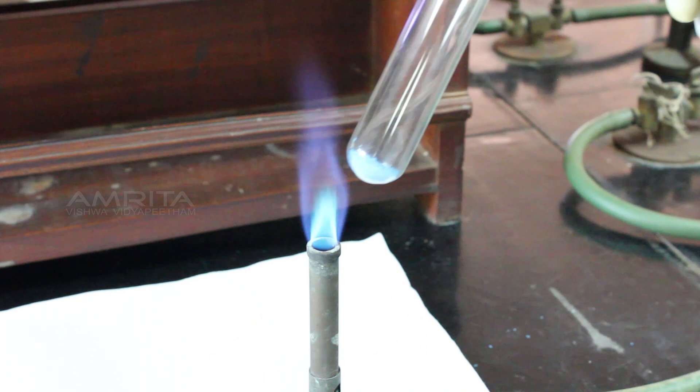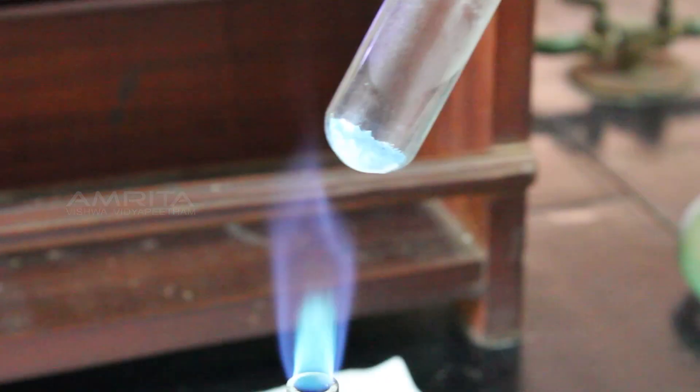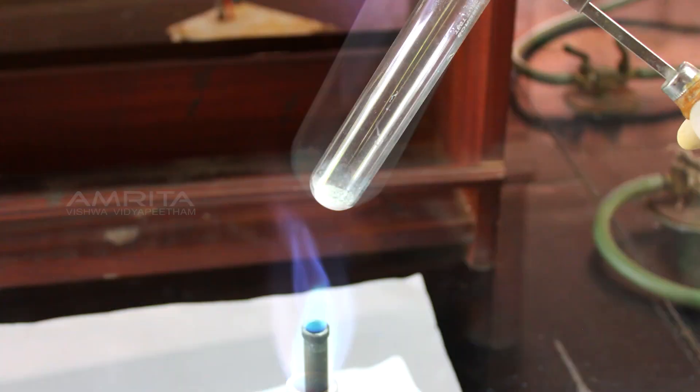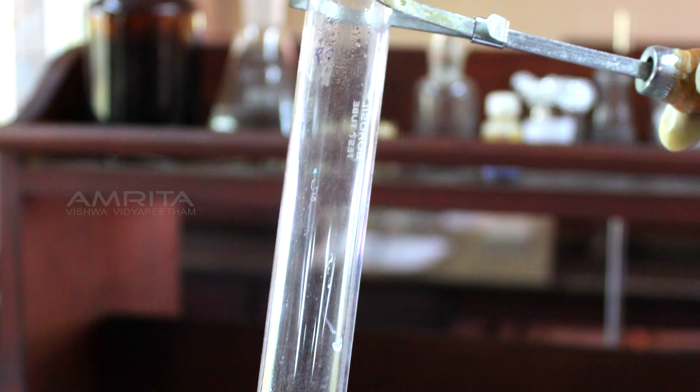Heat the boiling tube over the flame of a Bunsen burner first gently and then strongly. On heating, the colour of copper sulphate crystals changes from blue to white.